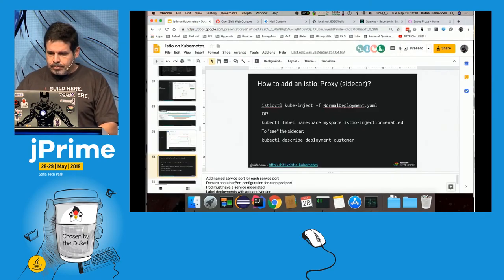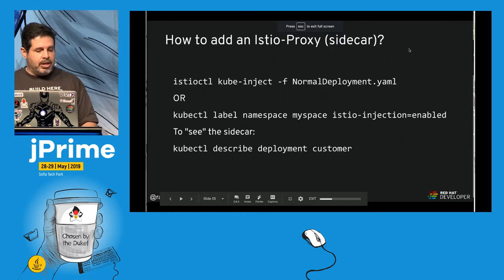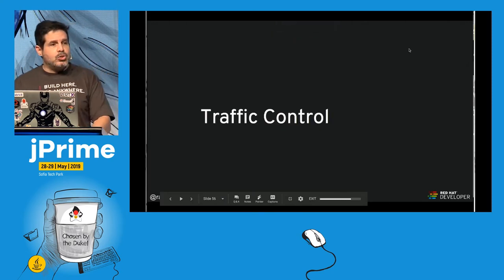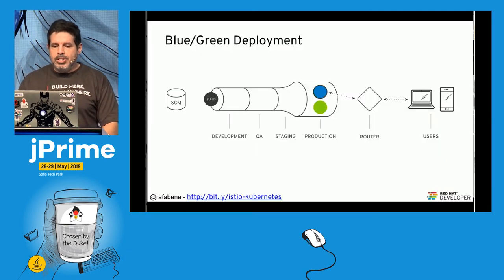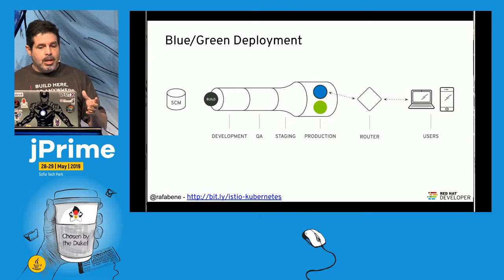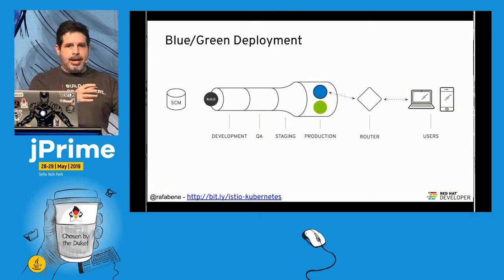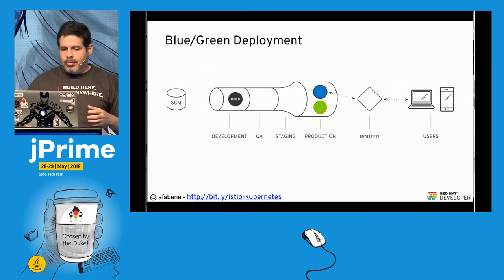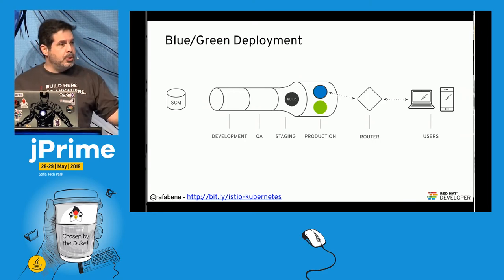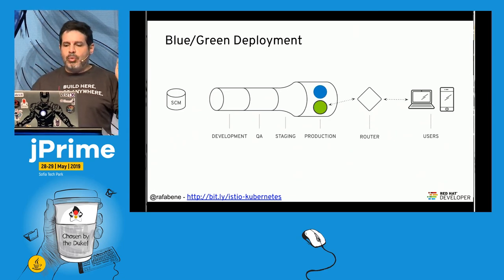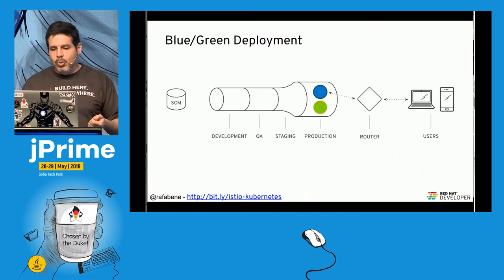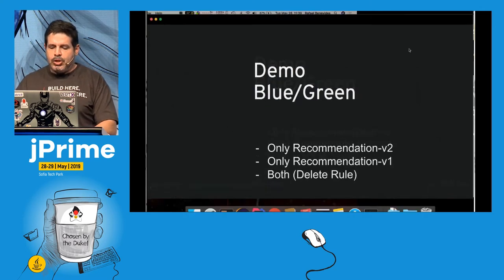Now let's see what we can do with Istio. First, a simple traffic control: blue-green deployment. A blue-green deployment is when you place a new version in production and just flip a switch — show everyone the green version, and if something goes wrong, revert to blue. So let's send all requests to recommendation v2.